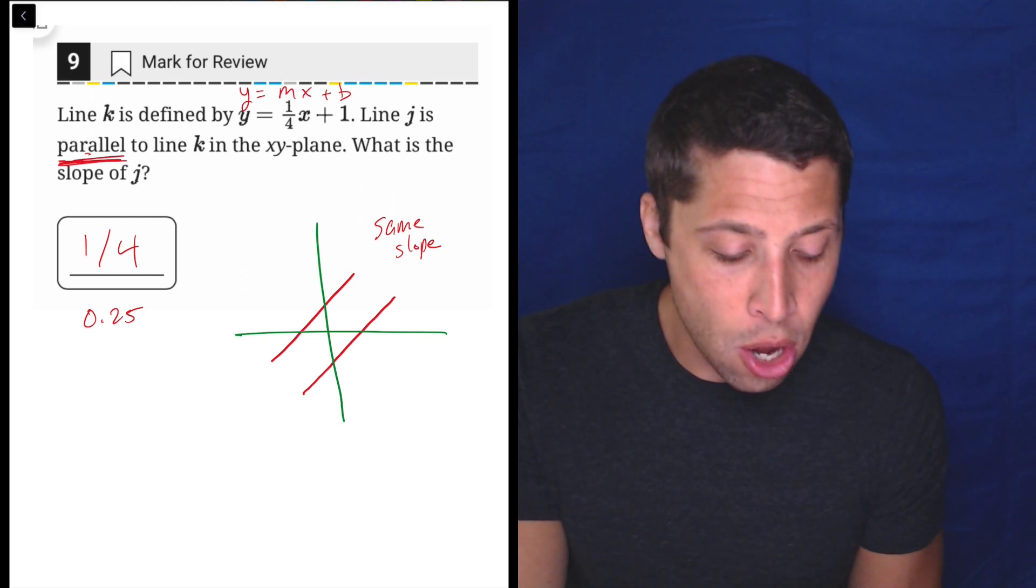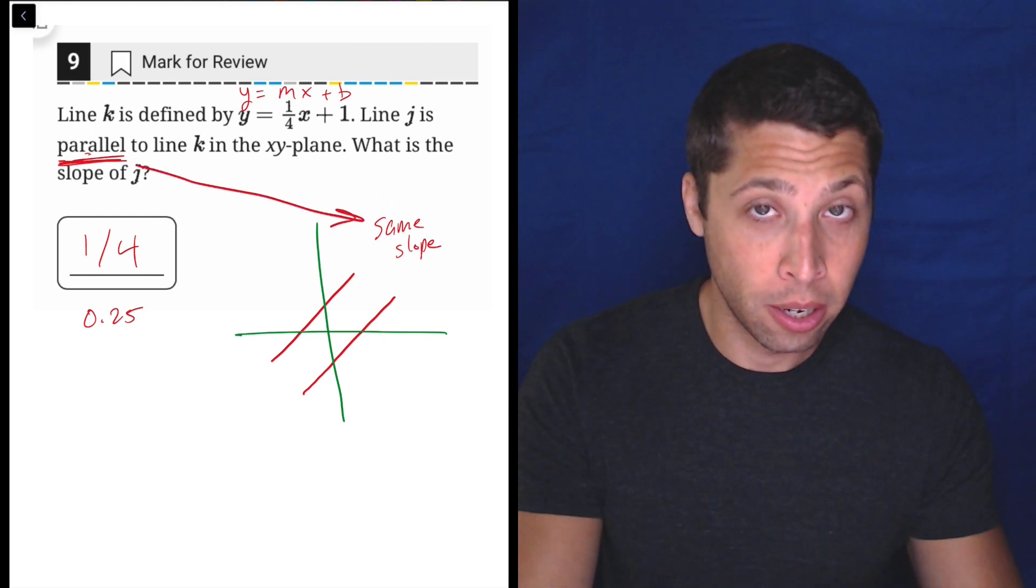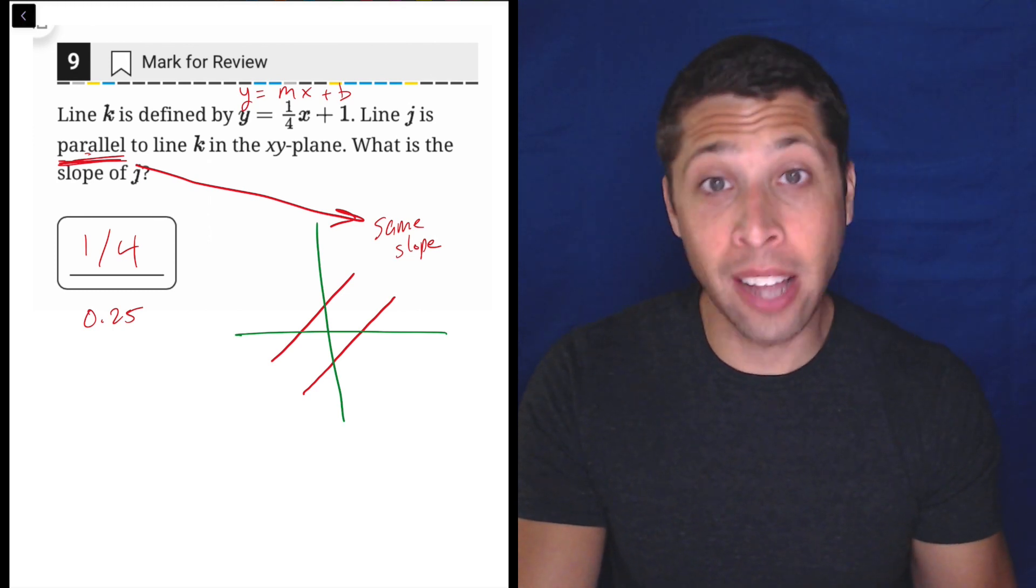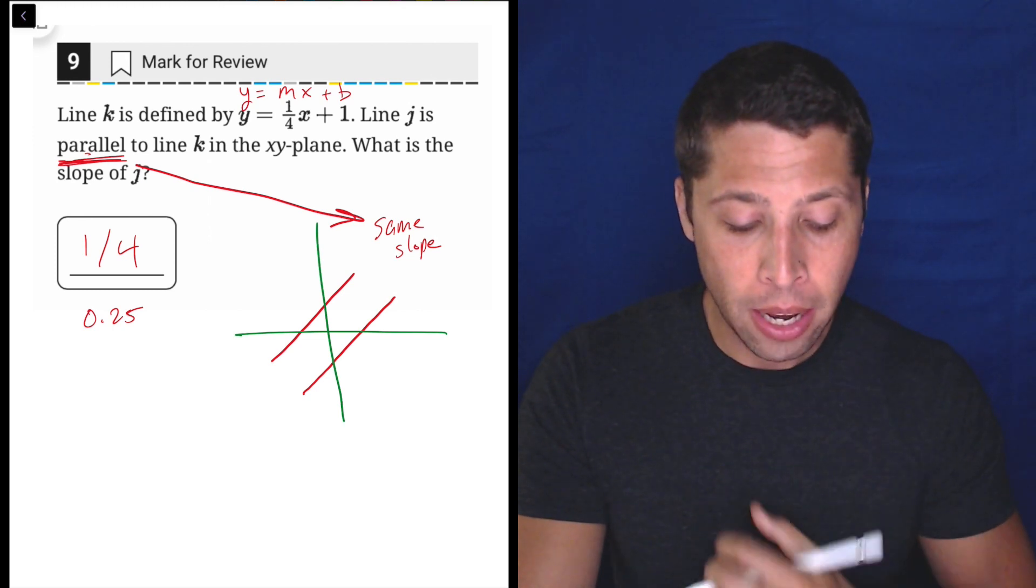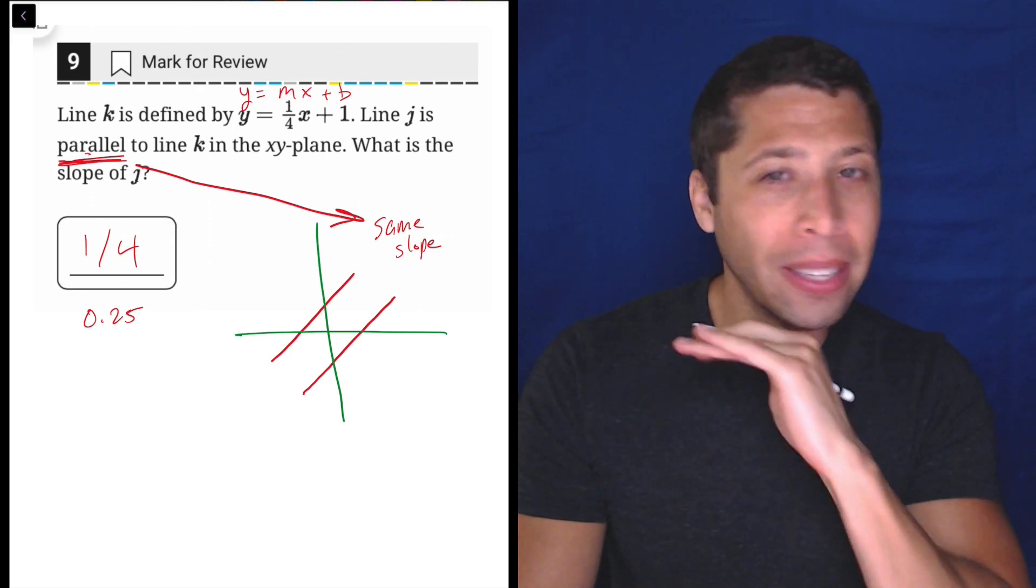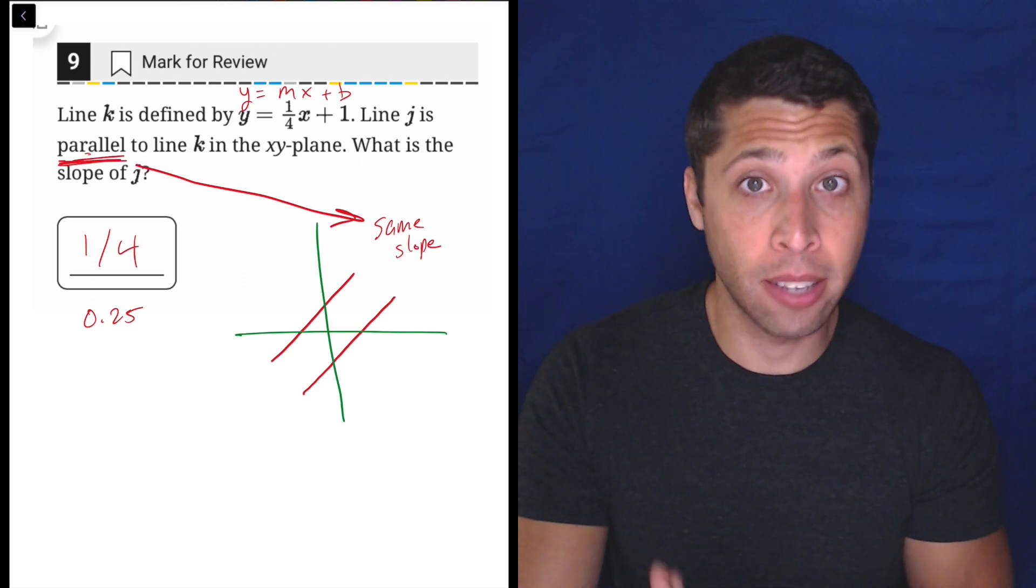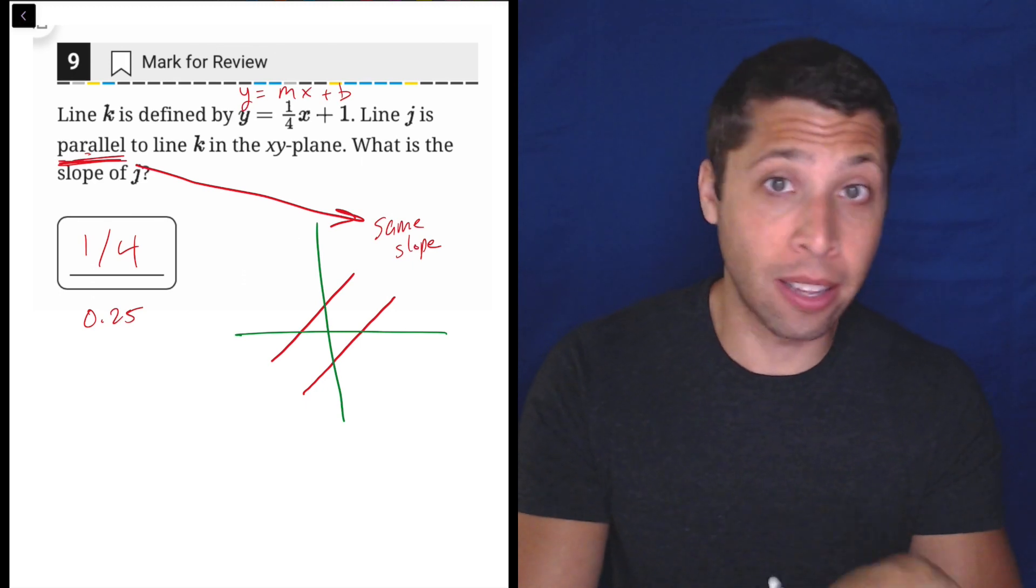So you need to be able to, when you have an algebra question, an xy-plane question, know that parallel is code for same slope. And obviously this only applies to lines, because lines have slopes. But you need to be able to make that connection instantaneously. It just has to be automatic.